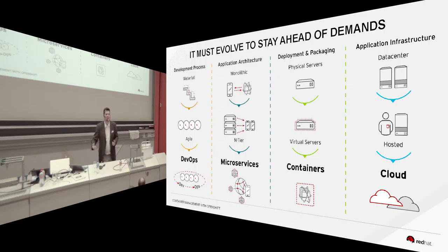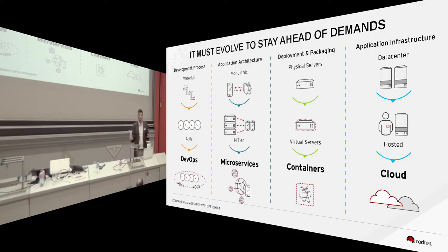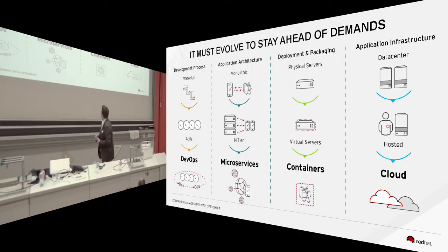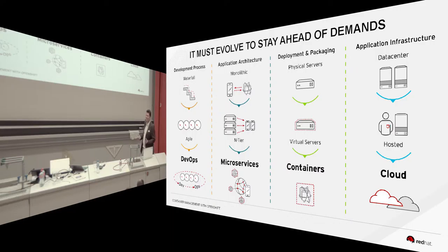Before, in VM virtualization, when we had an Apache web server, we had to check the logs, increase the memory, increase disk size, patch it, update it, and monitor it. In a microservice scenario, we don't do that anymore. We just monitor the swarm as a whole.